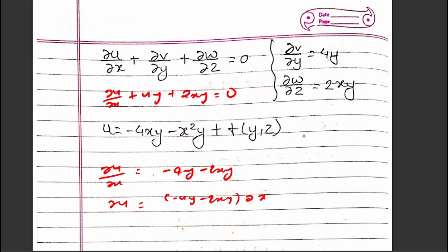Integrating both sides with respect to x: v = ∫(-4y - 2xy)dx = -4xy - x²y + constant. The constant is a function of y and z, so v = -4xy - x²y + f(y,z).